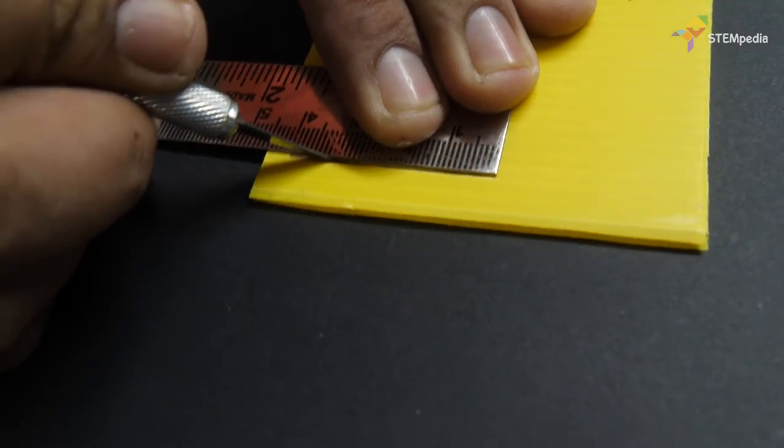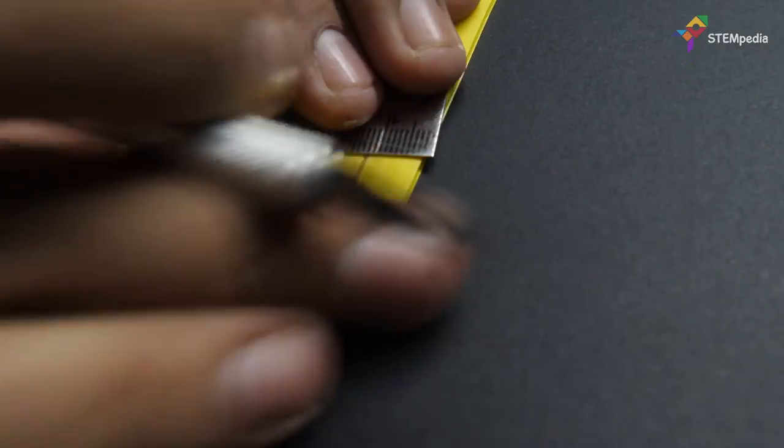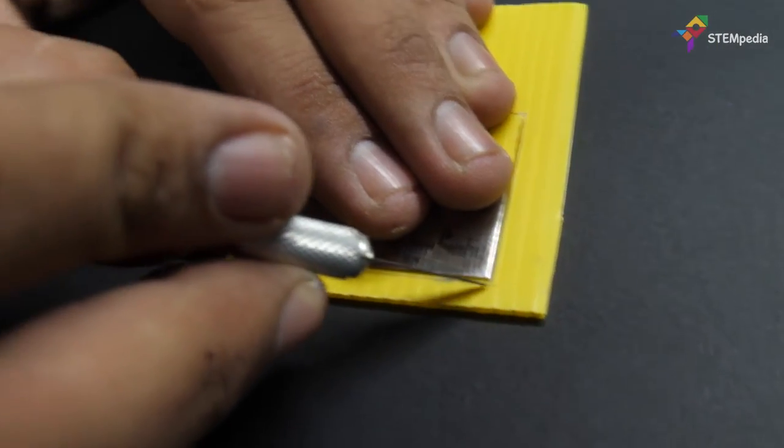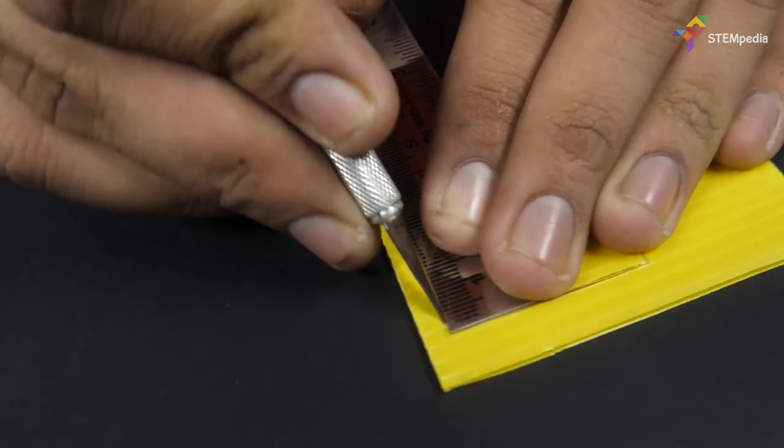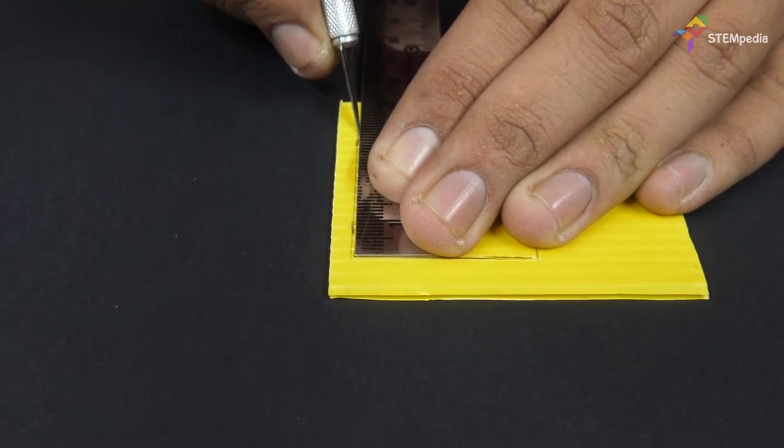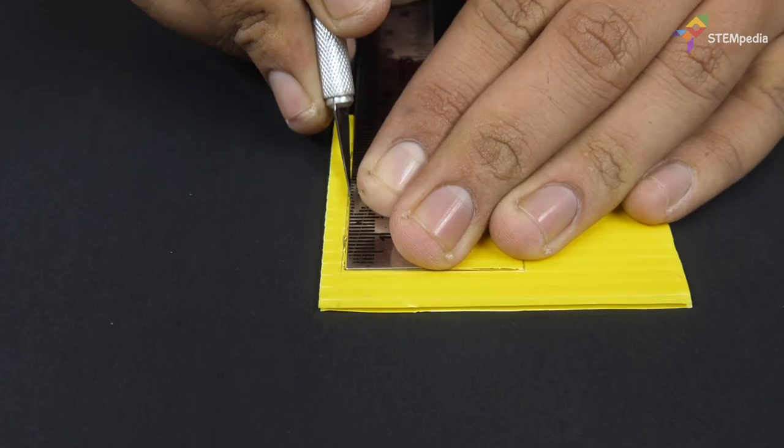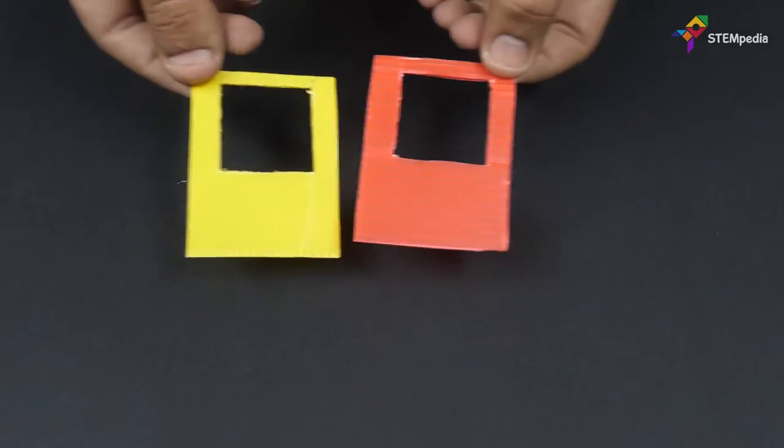Now, cut along the edges of the rectangle. Make a window in the second piece as well.